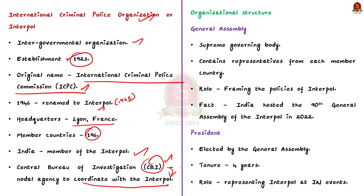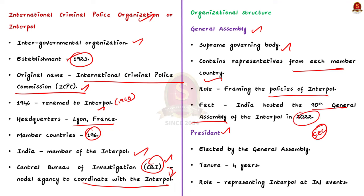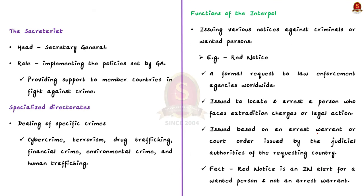Let us see the organizational structure of Interpol. Interpol has three main bodies: the General Assembly, the President, and the Secretariat. The General Assembly is the supreme governing body, comprising representatives from each member country, and meets once a year to frame policies. India hosted the 90th General Assembly of Interpol in 2022. The President is elected by the General Assembly for a term of four years and represents Interpol at international events, also overseeing the Secretariat. The Secretariat handles day-to-day operations, headed by a Secretary-General elected by the General Assembly, and implements policies set by the General Assembly.